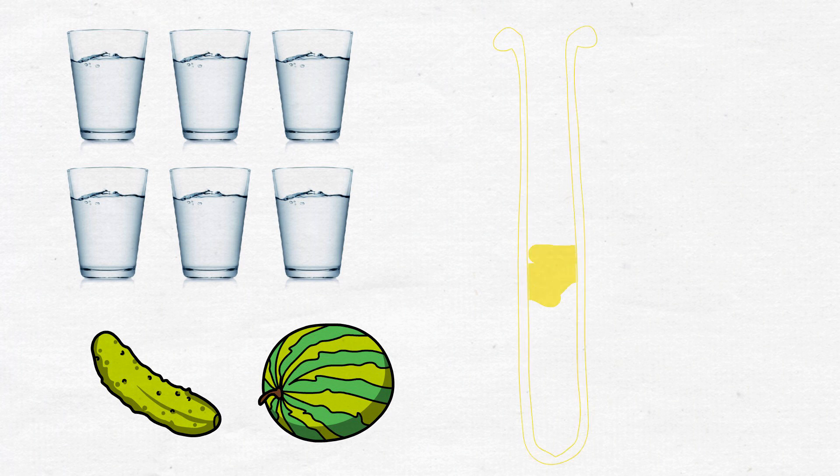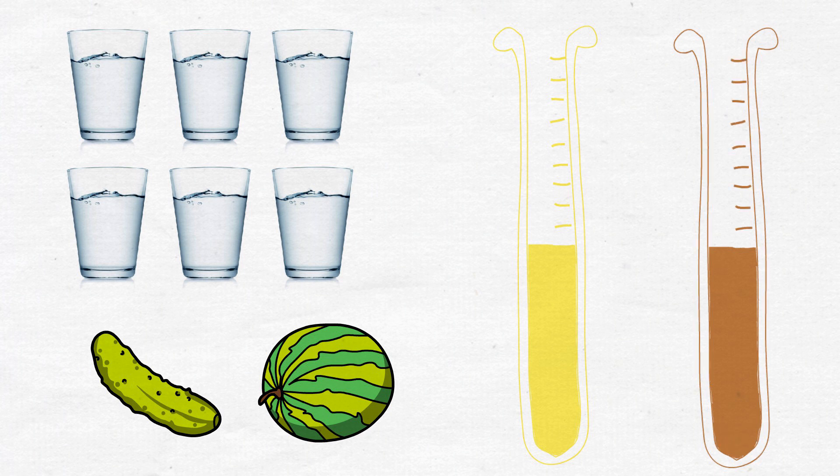The hue of your pee will tell you about your hydration levels. You are not hydrated enough if it is darker than pale yellow.